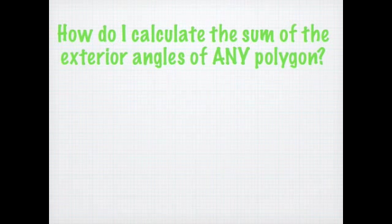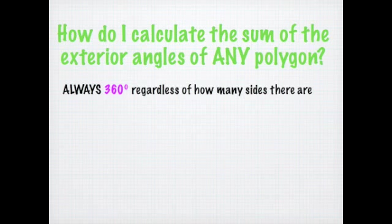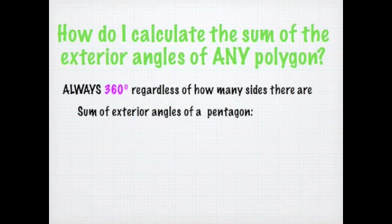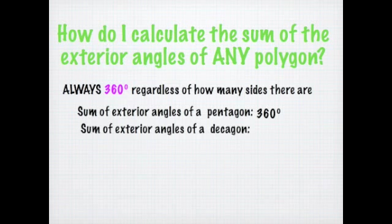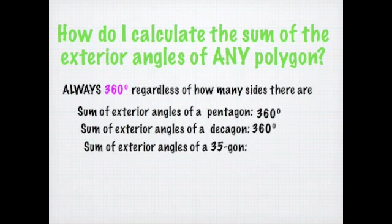How do I calculate the sum of the exterior angles of any polygon? This is really easy because it's always the same: it's always 360 degrees regardless of how many sides there are. The sum of the exterior angles of a pentagon is 360. The sum of the exterior angles of a decagon is also 360. And the sum of exterior angles of a 35-gon — 360. Every time, all the time, it's 360 degrees.